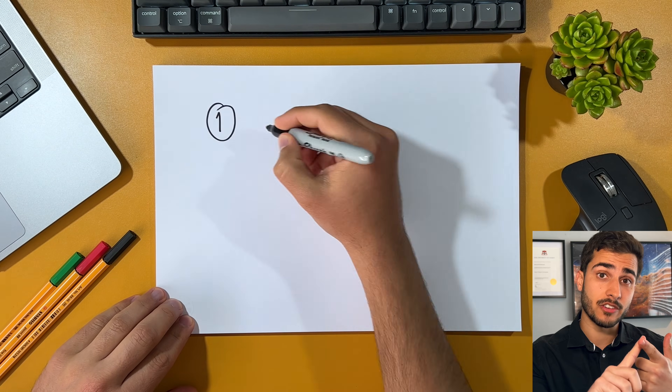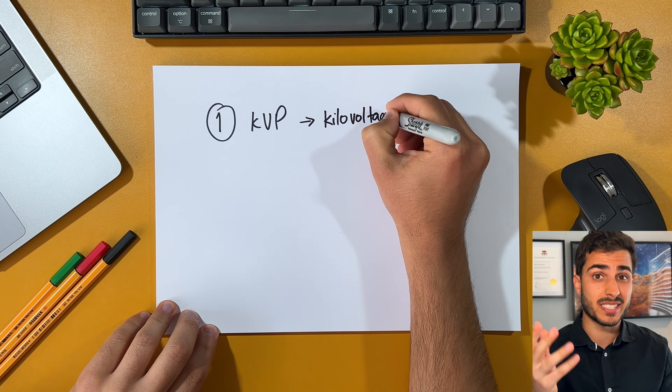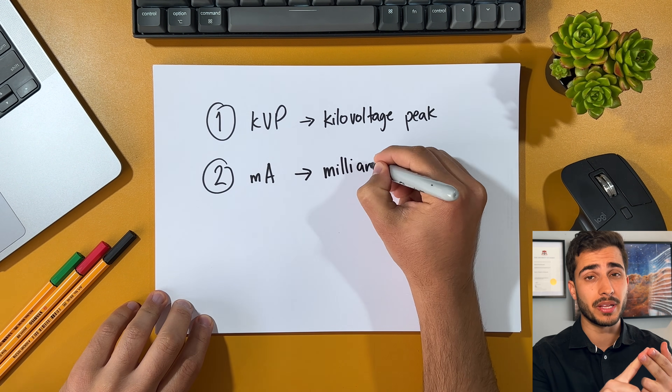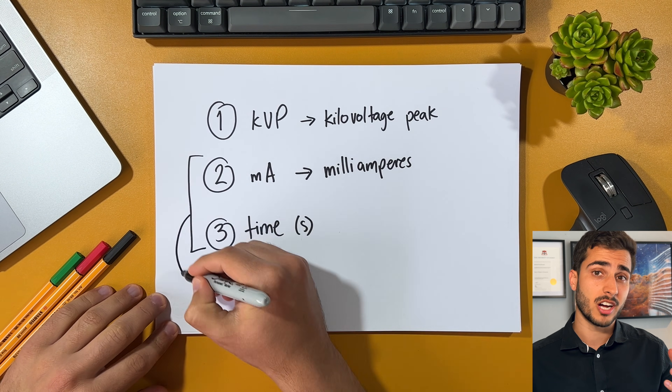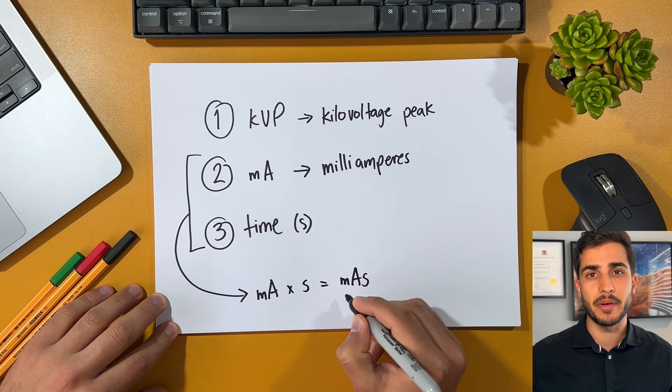We can adjust the x-ray beam of an exposure with three key primary factors: the KVP, or the kilovoltage peak, sometimes referred to as KV for convenience; MA, the tube current in milliamps; and time in seconds. Often the current and time are combined or multiplied together to give the MAS. I'm going to take you through each of these factors so hopefully we can understand what they're all about.